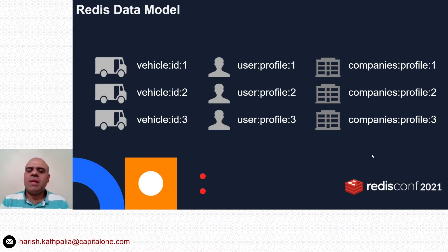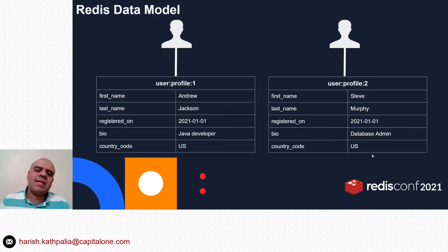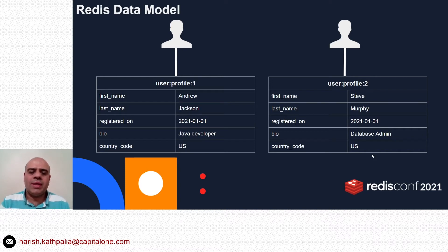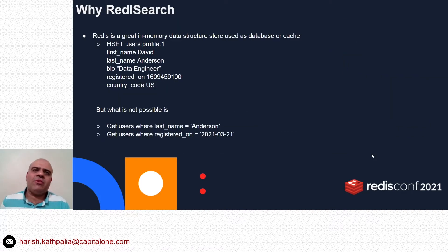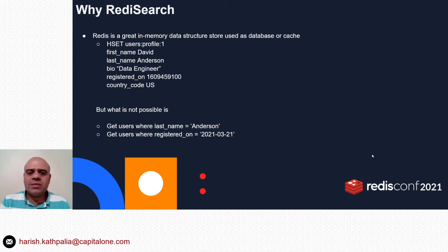The Redis database contains keys, and the key name makes up the namespace. Each user in Redis is modeled as a hash. The hash contains various attributes like first name, last name, registered-on, and country code. Each hash is accessed by a particular key like user:profile:userID. When we request data using a key, that request is a constant-time operation — very fast. But what if we want to query on attributes other than the primary key, like last name or registered-on? For that we need secondary indexing, and that's the reason why we need Redis Search.